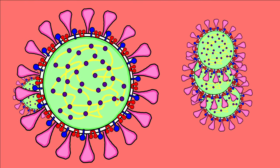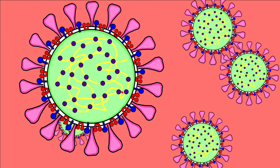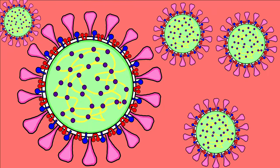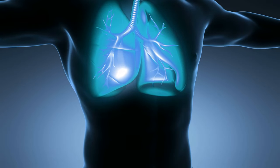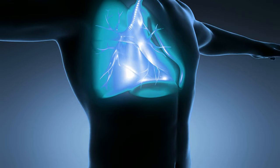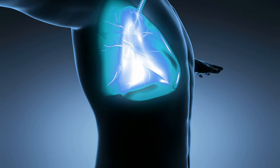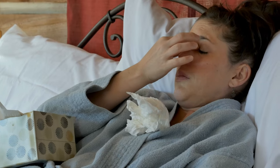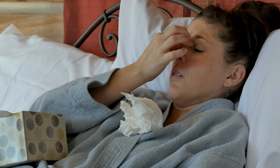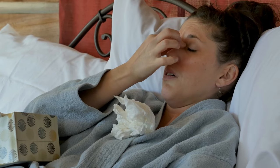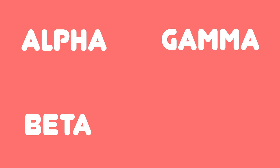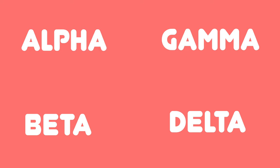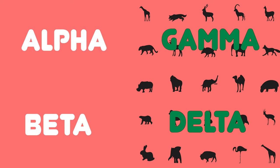Coronaviruses are a highly diverse family of viruses that usually cause mild to moderate upper respiratory tract illnesses, like the common cold. They are generally broken down into four subtypes: alpha, beta, gamma and delta, with the latter two only occurring in animals.